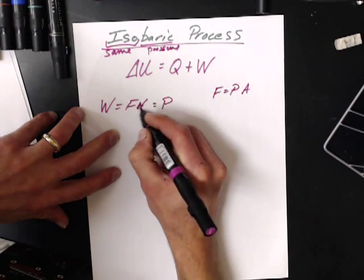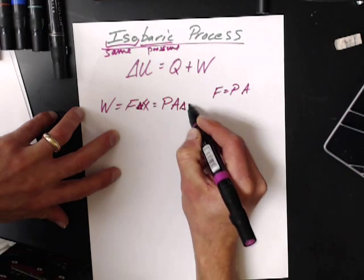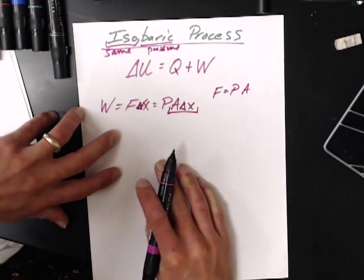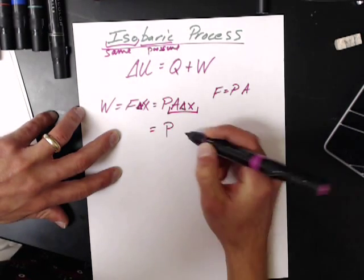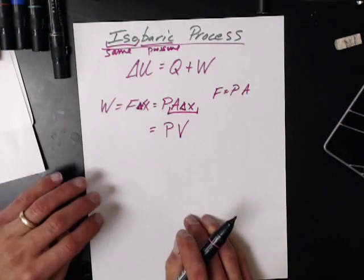Actually this is F delta X, P A delta X. Area times the delta X is a volume, and now I've got pressure and volume.